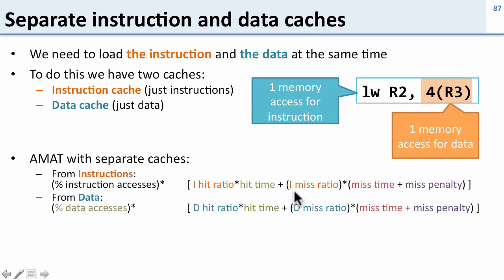What you notice here is that the miss ratios for instruction and data may be different. So it may be that the instruction cache is much better than the data cache, and so you need to take this into account to see which one hurts you more. And then for the final AMAT you just add them up.